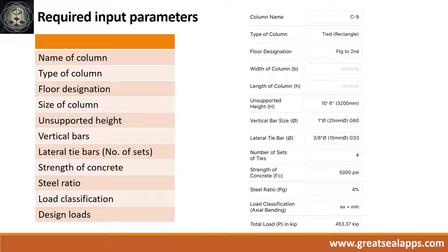Assume a self-weight of 3.37 kips for a total load of 453.37 kips. Enumerate input parameters required. Column name: C9. Rectangular shape, tied column. Floor designation: footing to second. Unsupported height: 10 feet, 6 inches.